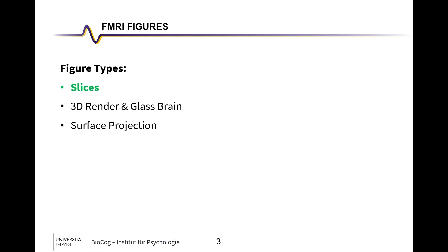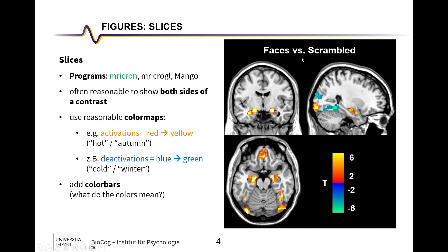Starting with brain slices — these are literally slices through the brain. Different programs can do this: MRIcroGL, MRIcron, and Mango. It's often reasonable to show both sides of the contrast — positive activations and negative activations — so faces larger than scrambled and scrambled larger than faces. For this, use reasonable color maps: activations in warm colors from red to yellow (called 'hot' or 'autumn'), and deactivations in cold colors from blue to green (called 'cold' or 'winter'). Always add color bars — in this case plotting t-maps from 2 to 6 or −2 to −6.